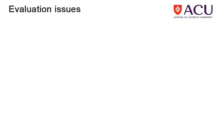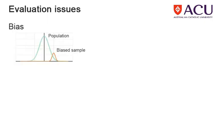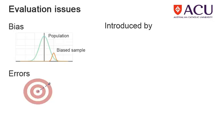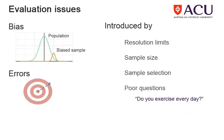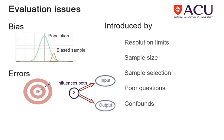The reader should also be aware of issues that may introduce bias into the data or errors into the analysis. These can be introduced by such diverse circumstances as the resolution limits of the measurements, the sample size, the ways used for selecting respondents and for repeating measurements, the way the survey questions are asked, and confounding factors and influences that the authors may not have considered.